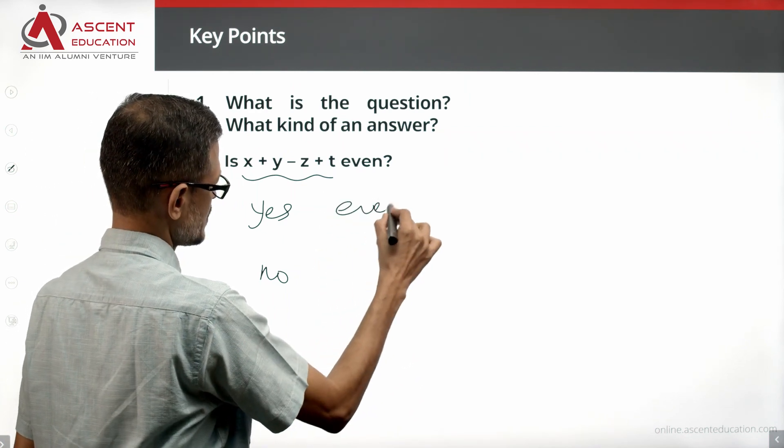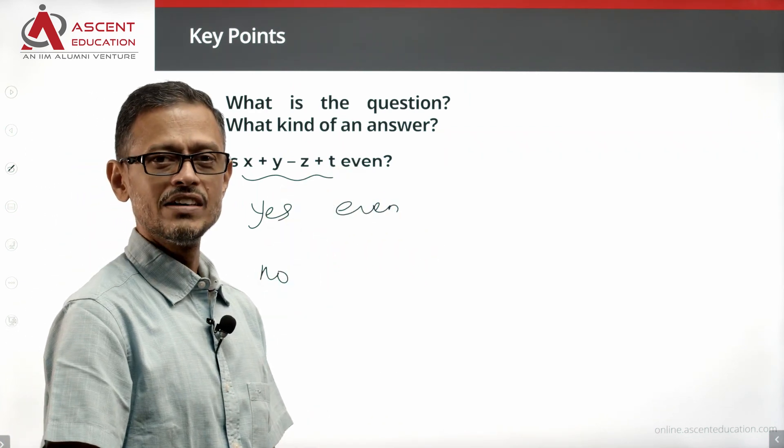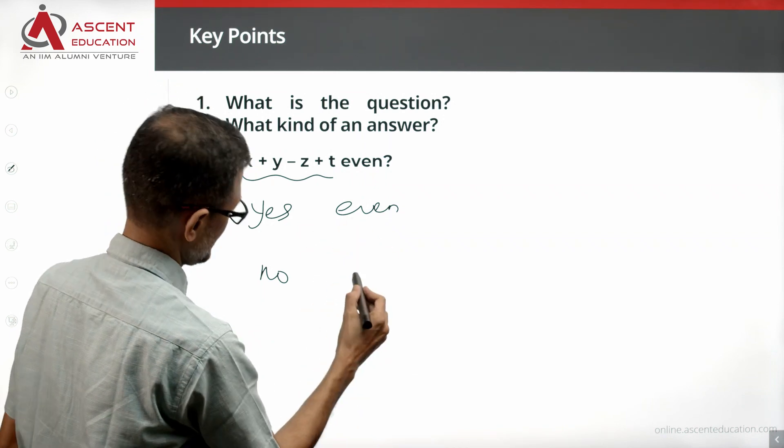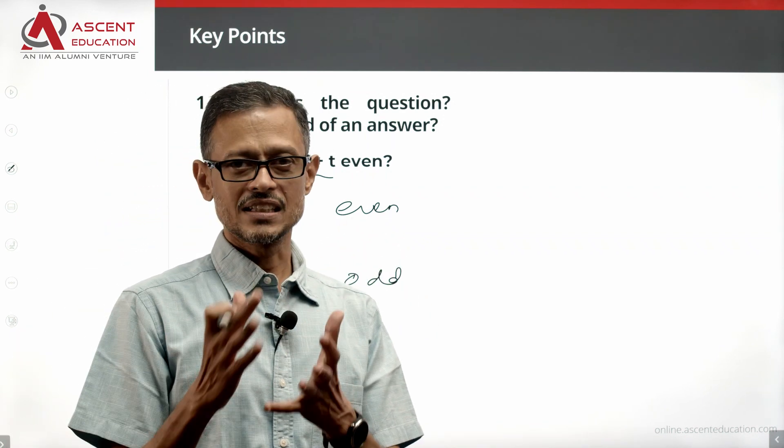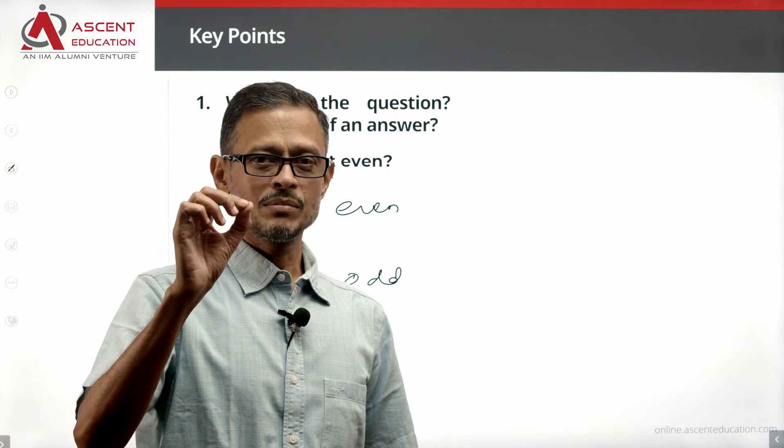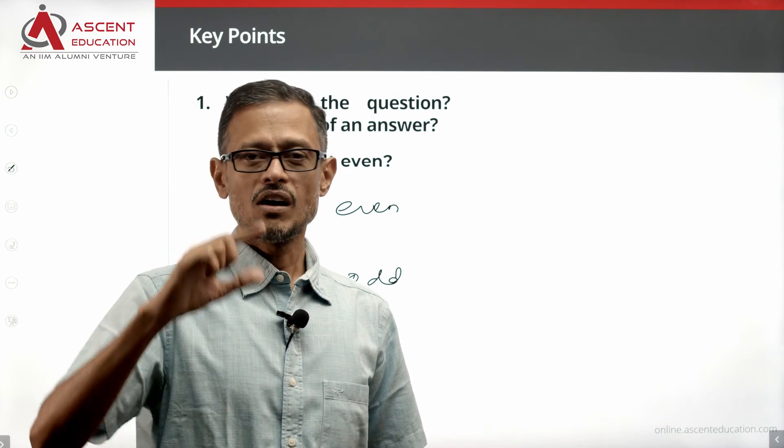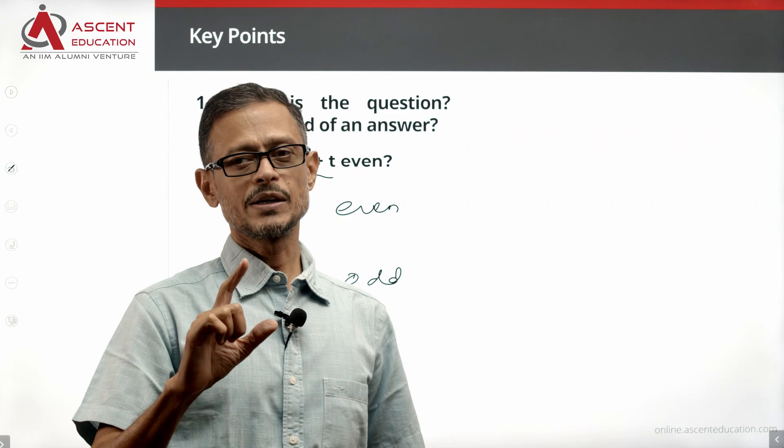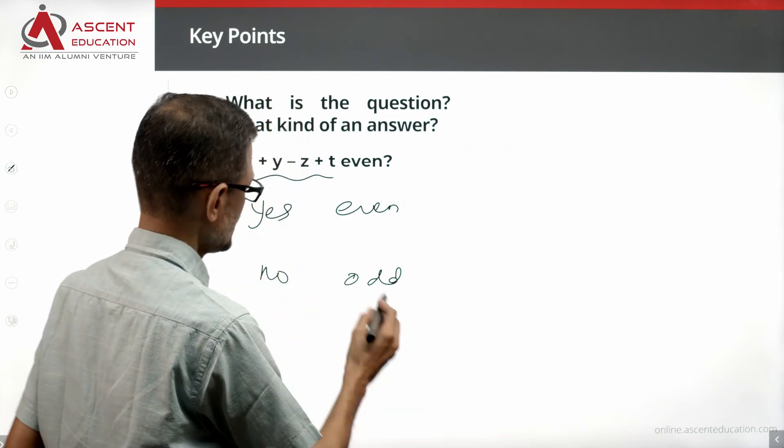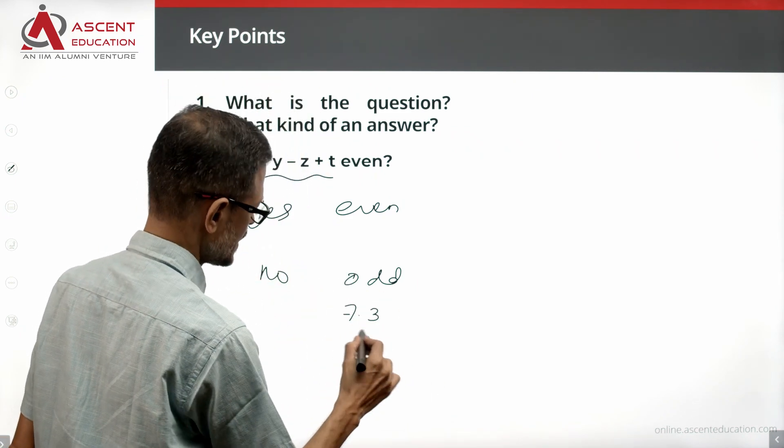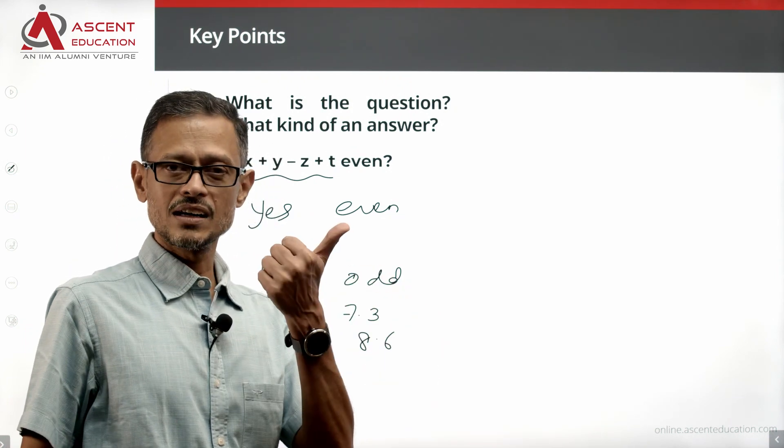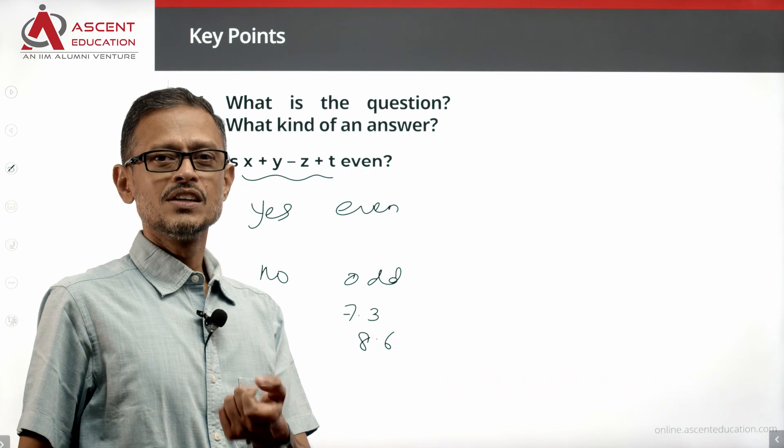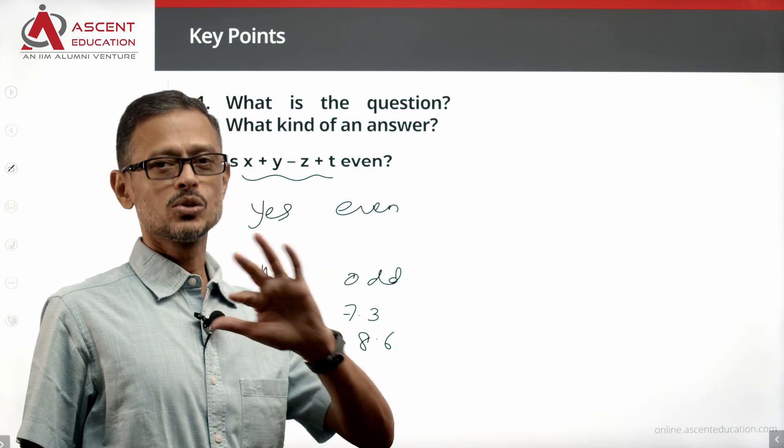When is it a yes? When this final result is even, then it is a yes. When is it a no? Odd is obviously one thing, right? But keep in mind, even numbers are numbers which are divisible by two. Odd numbers are integers which are not divisible by two. Non-integers are also not even. For example, 7.3 or 7.2 - these are not even numbers. So if it's odd, then no is the answer. If it's a non-integer, then no is the answer.